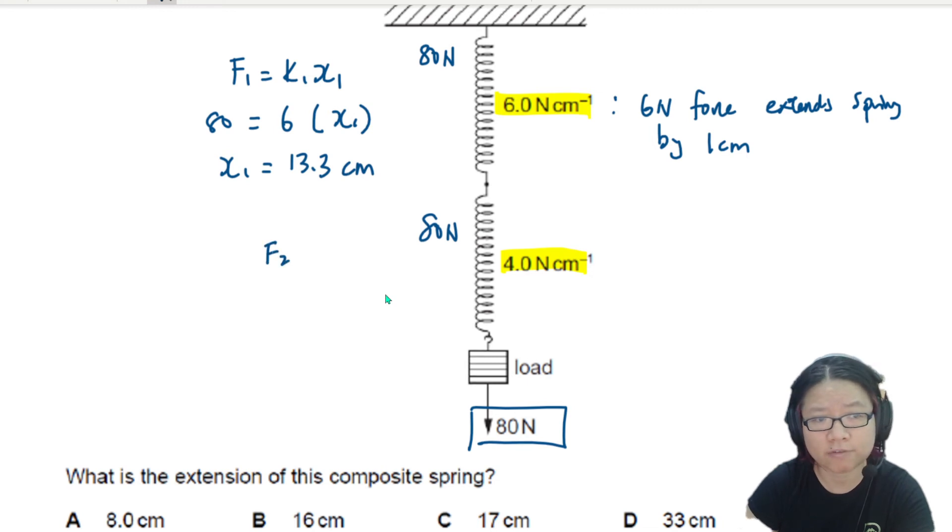Repeat again. F2 is equal to K2 X2. 80 N is 4 times X2. So you can find X2. X2 is 20 cm.